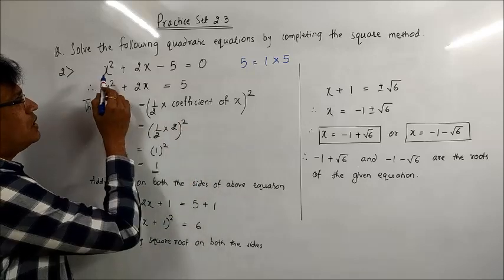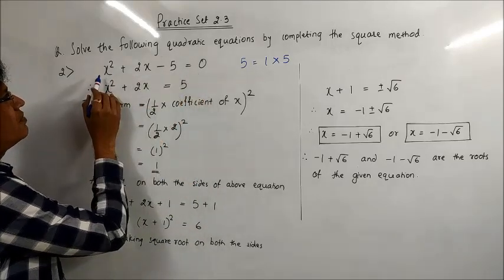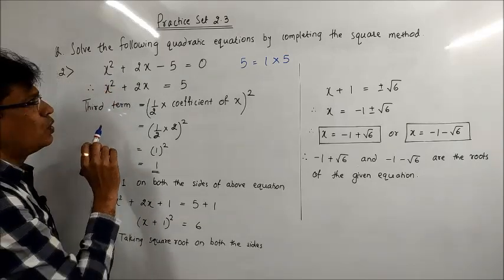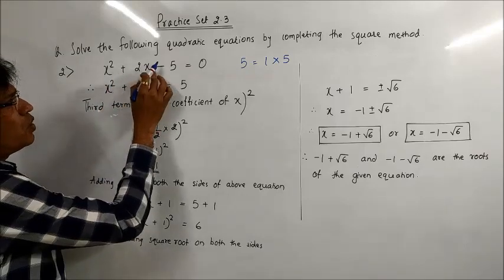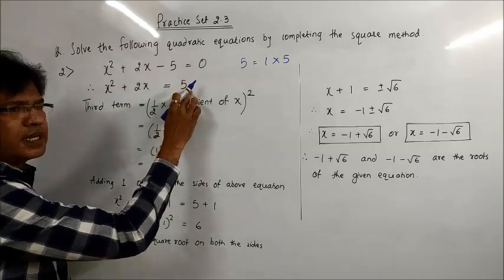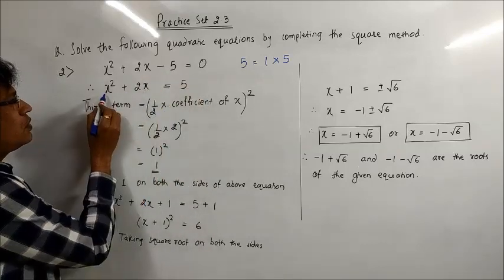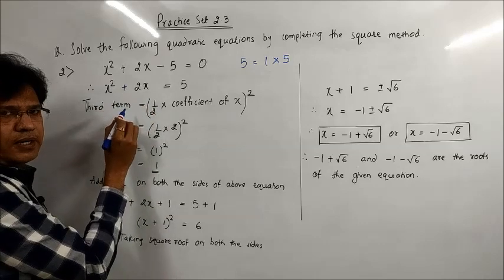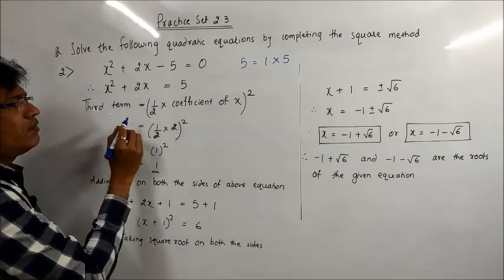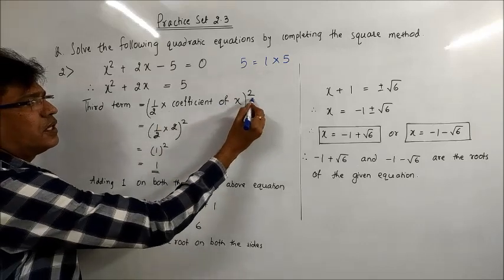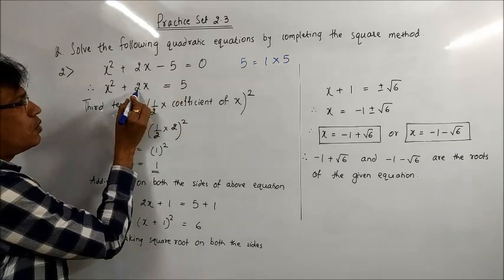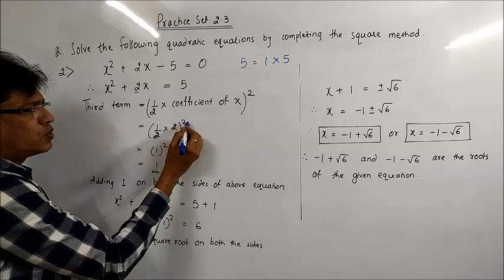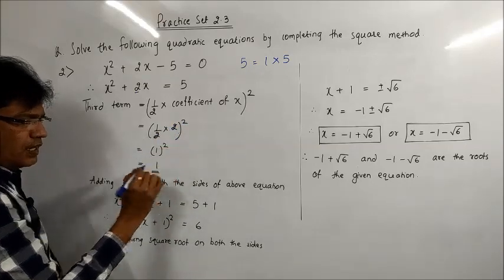In this method, your equation should have the square term whose coefficient is 1. We take the constant term to the right-hand side, so -5 becomes +5 on the other side. This is the first term, this is the second term, and now we need to find the third term. To find the third term we use the formula: (½ × coefficient of x)². Here the coefficient of x is 2, so we do (½ × 2)², the 2s cancel, and we get 1² = 1.